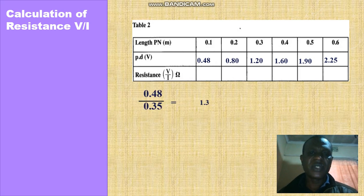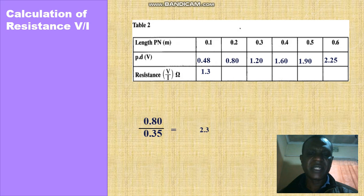So 0.48 divided by our current which was 0.35, we get 1.3. 0.8 over 0.35, we get 2.3. 1.20 over 0.35, we get 3.4.